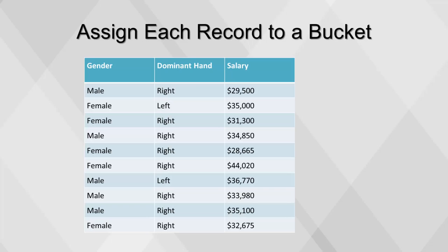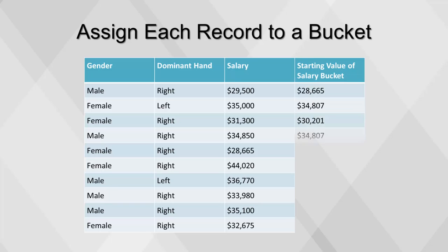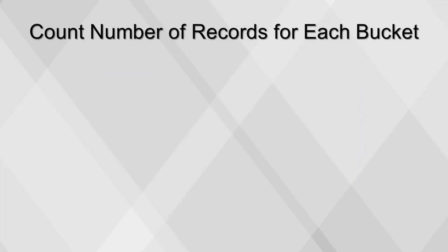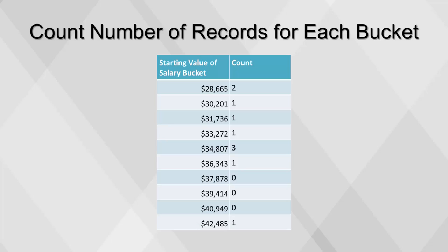We'll add a new column to the original table to assign each person into a salary bucket. Summarize the new variable — starting value of salary bucket — counting how many occurrences of each bucket are observed. Note that although this variable is numeric, by summarizing it, we're treating it as a categorical variable.